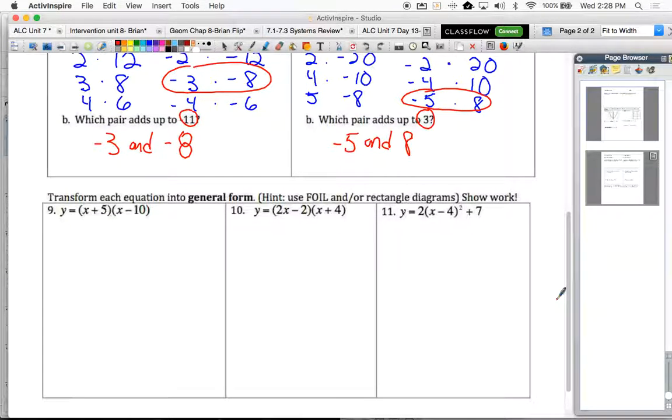Transform each equation into general form. Okay, so this is when we're going to be using either our FOIL or rectangle diagrams. Some of you guys do like FOIL. Some of you guys do like rectangle diagrams. You can choose what you'd like to do on the quiz. I'm going to do one of each here in number 9 and number 10 just for reference. So let's say we're using FOIL on this one.